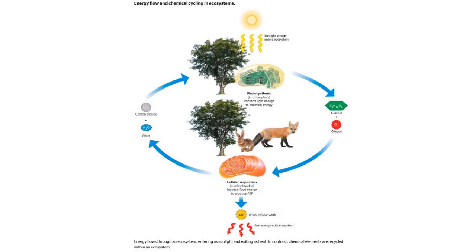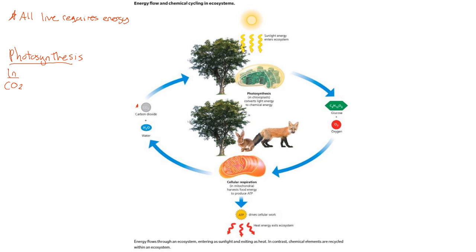Keep this idea: all life requires energy. On this side, we have photosynthesis, which is a little bit of a review from previous chapters. What do we need to get photosynthesis going? We need carbon dioxide, water, and energy — in this case, it's going to be light from the sun. What goes out of photosynthesis? Glucose and oxygen. So what goes in are the reactants; what goes out are the products.